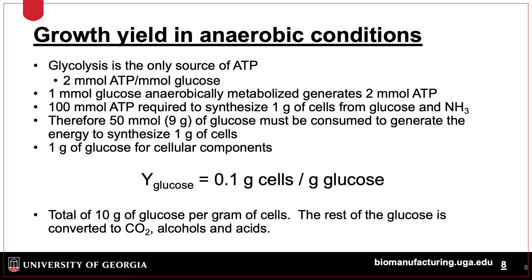Growth under anaerobic conditions is different. Because glycolysis is the only source of ATP, less energy is produced per gram of glucose — only 2 millimoles per gram glucose. If 100 millimoles of ATP is needed to make 1 gram of cells, then 50 millimoles of glucose, or about 9 grams, is needed for energy, plus 1 gram for cellular components, totaling 10 grams of glucose per gram of cells. The yield is therefore 0.1 gram cells per gram glucose.